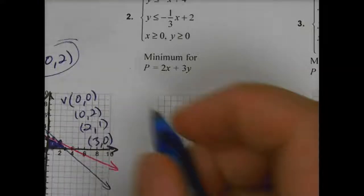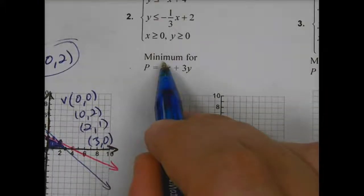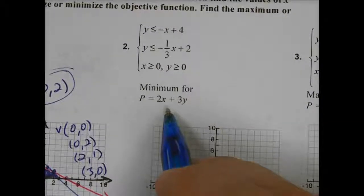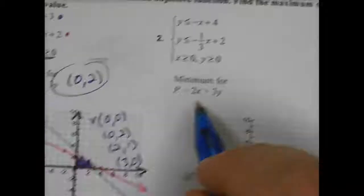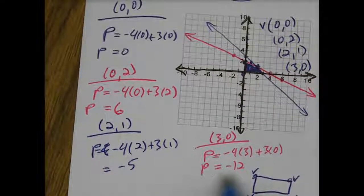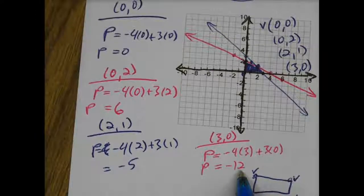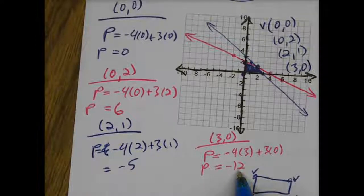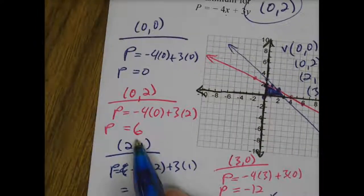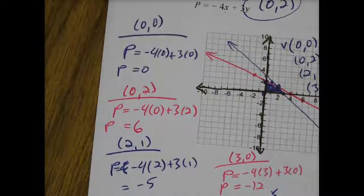If it said minimum, sometimes it will say minimum, you will have to graph all of this again. Then you will be looking for the least possible P value. So for this one, when we worked all of this out, our least possible P value was right here. So we would have said 3, 0 was our minimum. Minimum is least P value, maximum is the highest P value, and that's pretty much it.